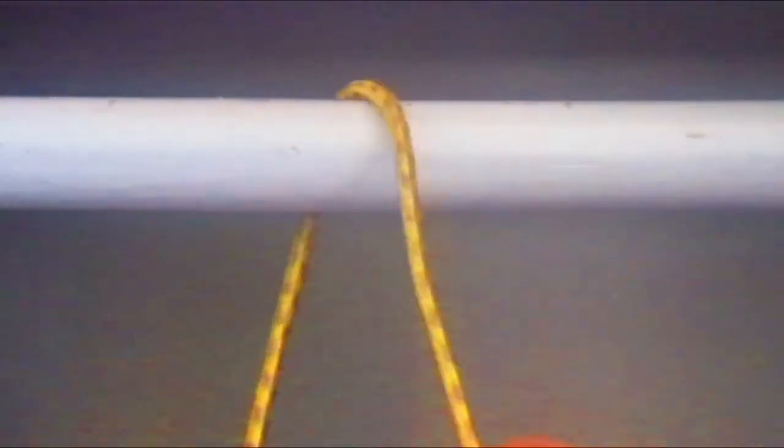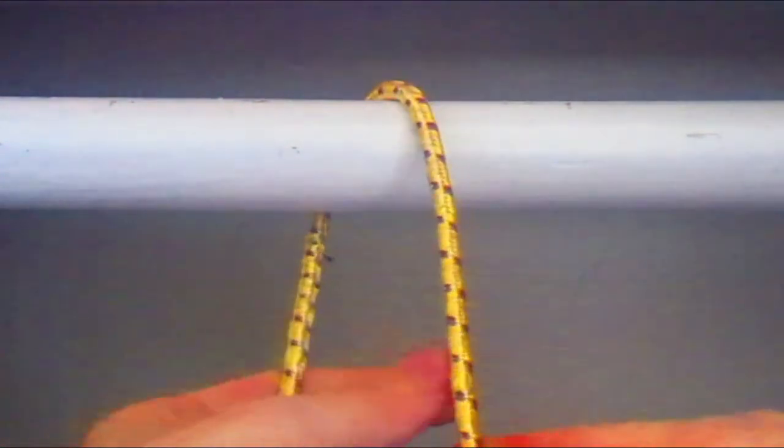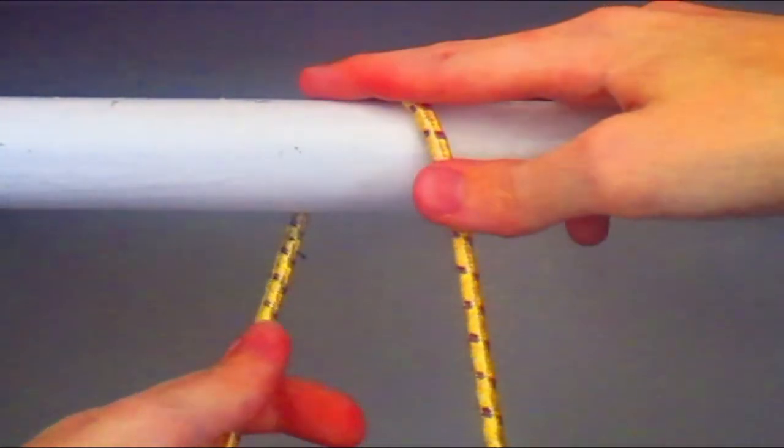You take the working end of the rope and you turn it round about the pole and give yourself plenty of slack. For beginners, place your index finger above the first wrap.